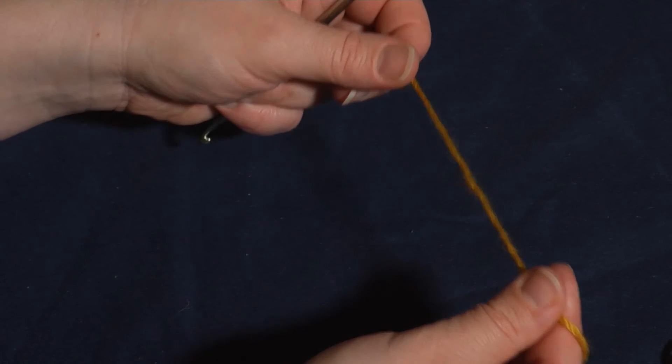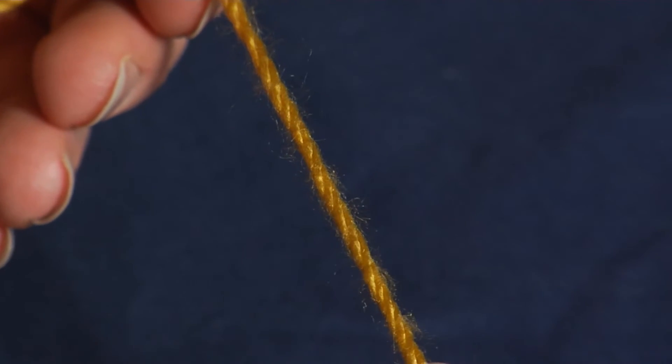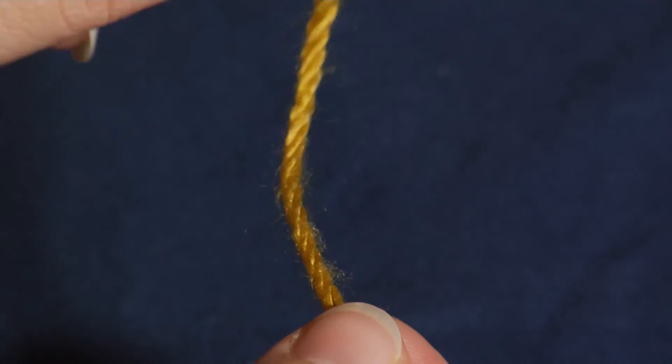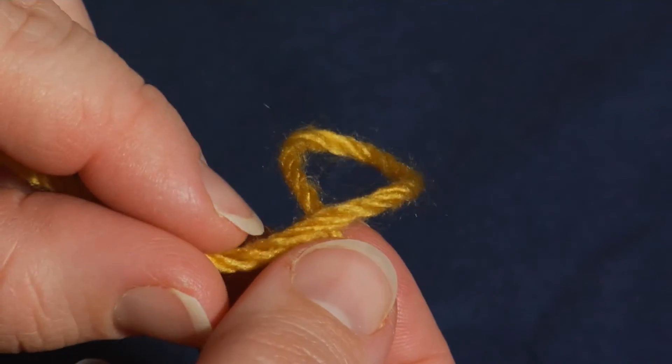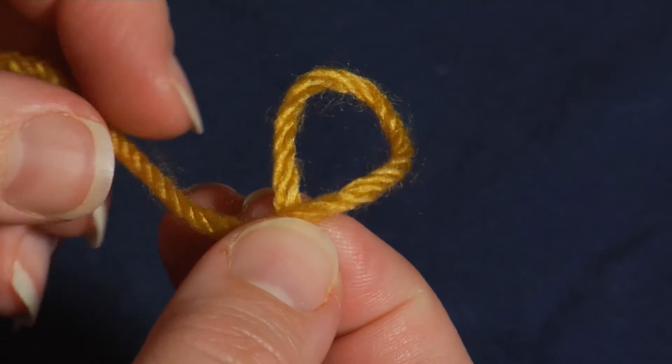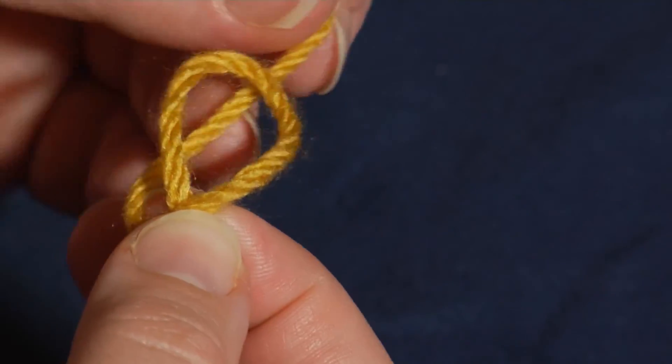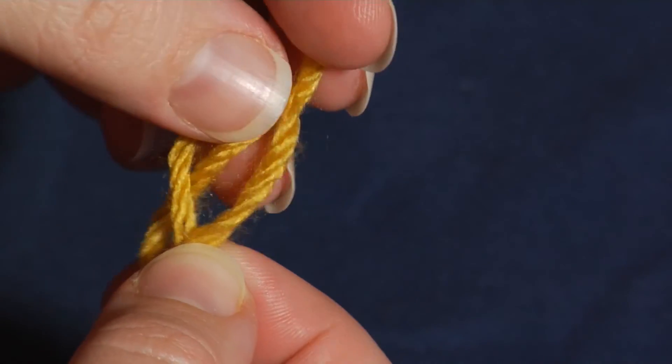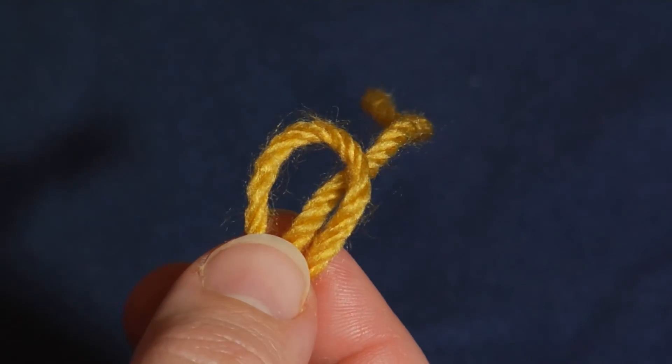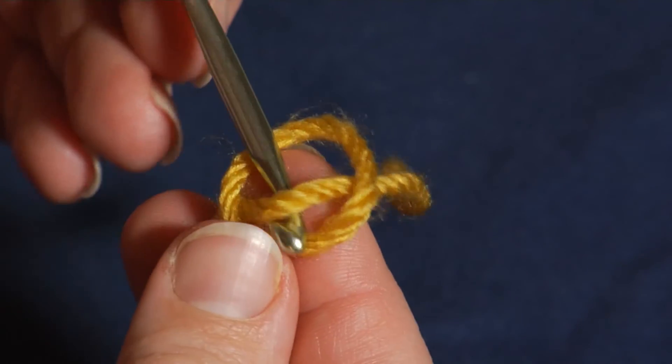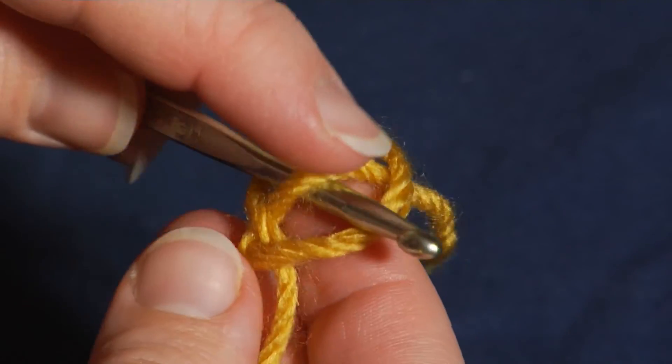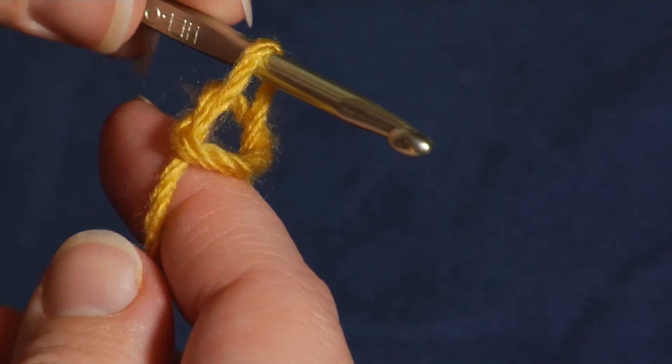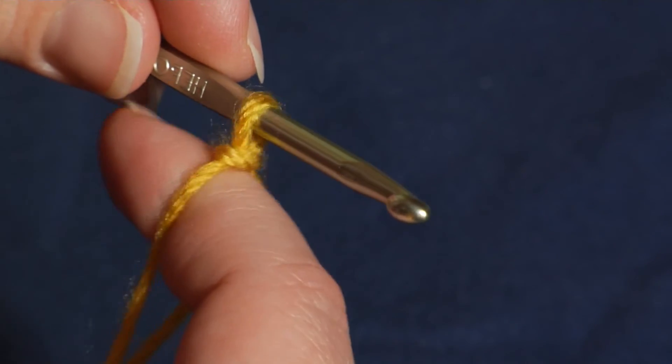Let's do that one more time. I've got the cut end in my right hand, the skein end in my left. We're going to create a loop, looping the cut end over the skein end, pull that cut end up behind, and pull a loop up in the center of that loop, pulling the ends down nice and tight.